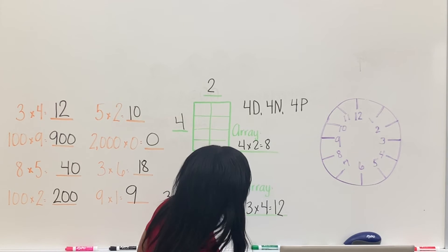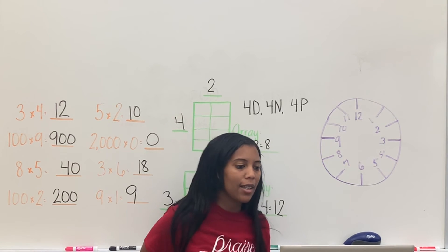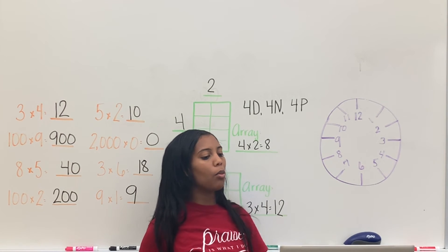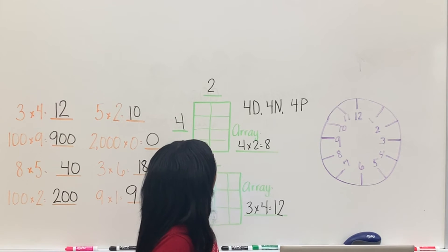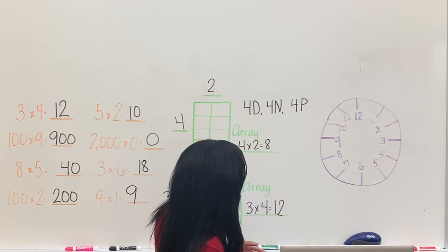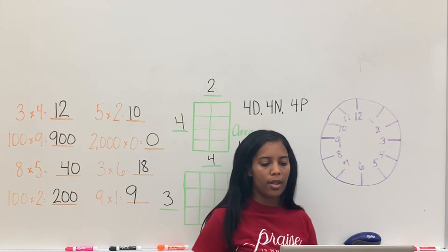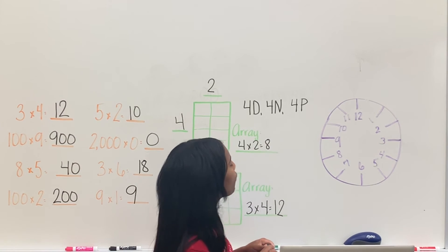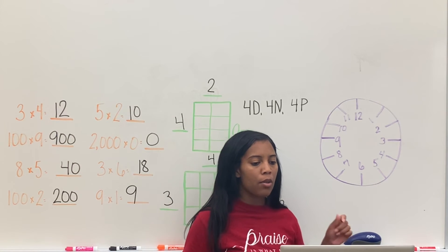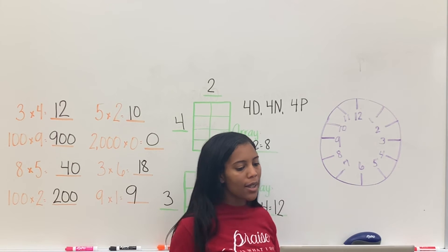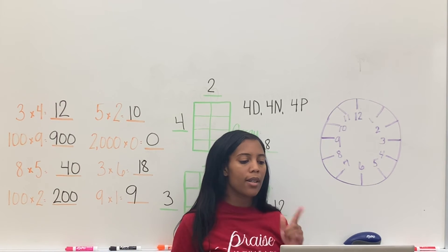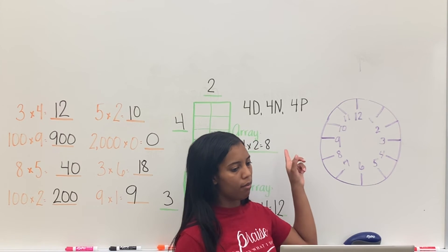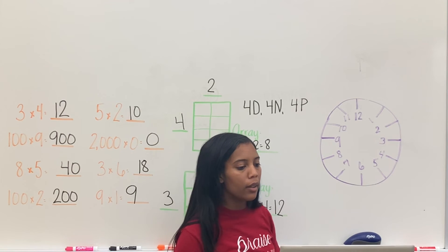4 dimes, so 4, 4, and 4. So dimes are 10s, nickels are 5s, pennies are 1s. 40. The answer is 64 cents. So 4 dimes is 40. Then with your 4 nickels, 45, 50, 55, 60. And then your 4 pennies made it 64 cents. There you go. Alright, good.